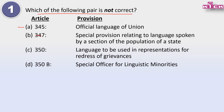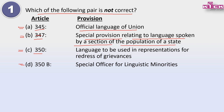Here we have 4 articles of the Constitution and the pairs are: Article 345 - official language of union; Article 347 - special provision relating to language spoken by a section of population of state; Article 350 - language to be used in representations for redress of grievances; Article 350B - special officer for linguistic minorities. Which pair is not correct?